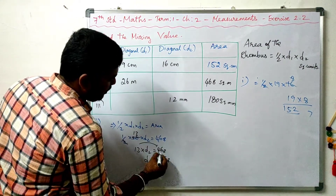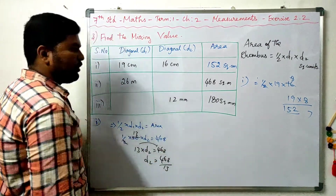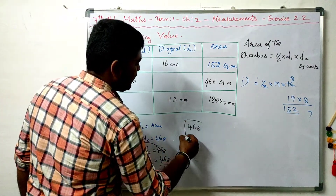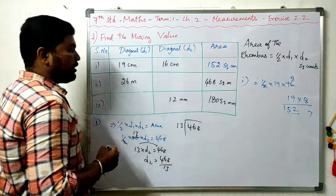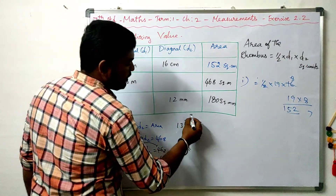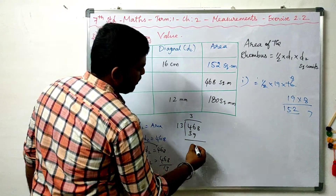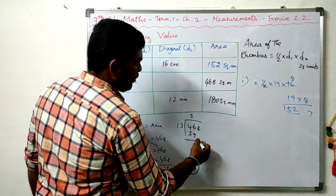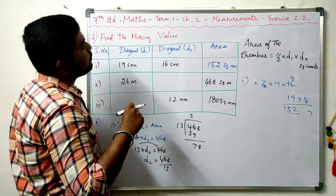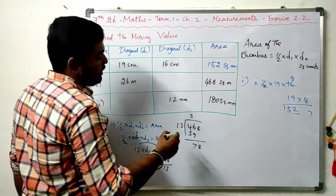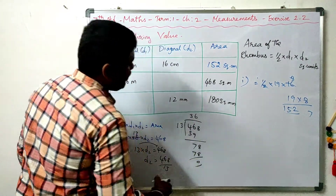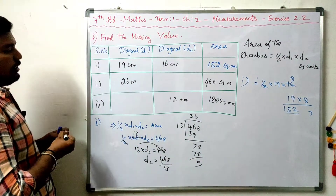Dividing both sides by 13: D2 = 468 divided by 13. Working it out: 13 into 4 is 39, 13 into 6 is 78. The answer is 36. The unit is meters. So D2 = 36 meters.